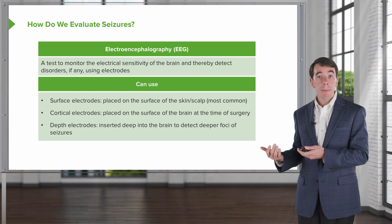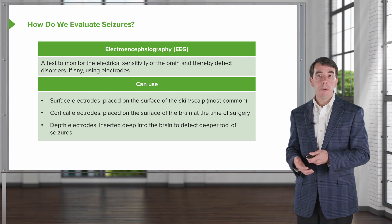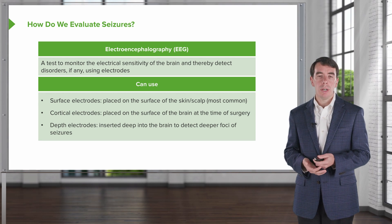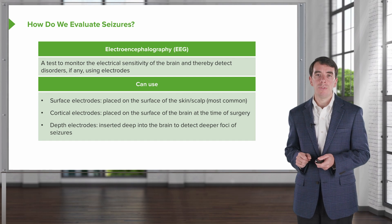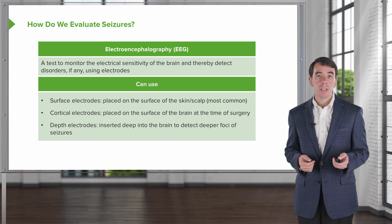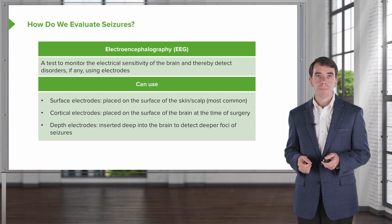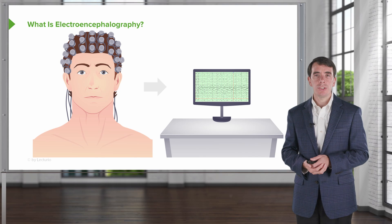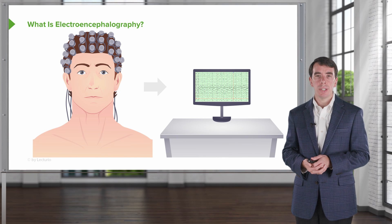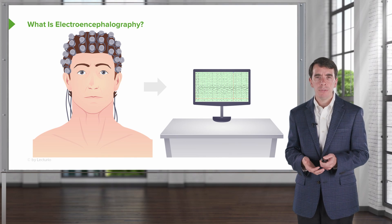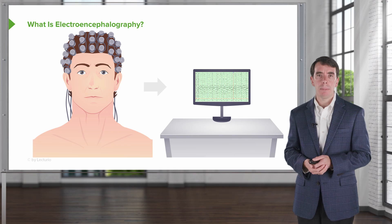By far and away, the most common EEG is the scalp EEG. We use cortical electrodes and depth electrodes in selected cases to really evaluate and interrogate a specific seizure focus prior to considering seizure surgery. So what is EEG? Let's take a look at it — how does it work, what are we looking at, and how do we use it clinically and in vignettes to evaluate patients?